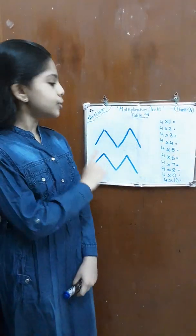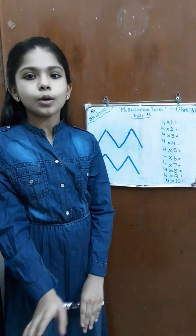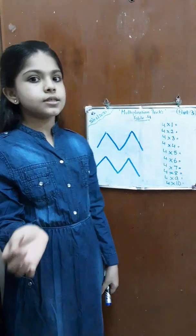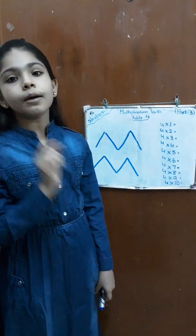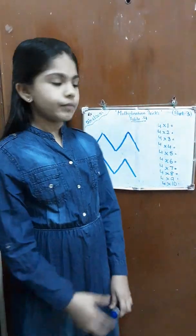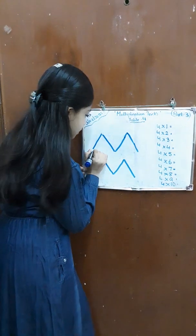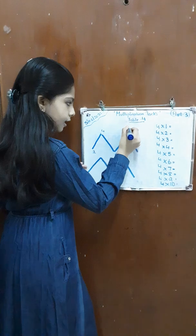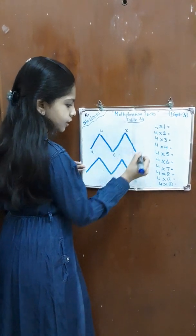Let's start by drawing two M's or two upside down W's. After drawing two M's, we have to write the numbers from 2 to 8, the even numbers of the 2 times table. That means 2, 4, 6, 8 and 0.